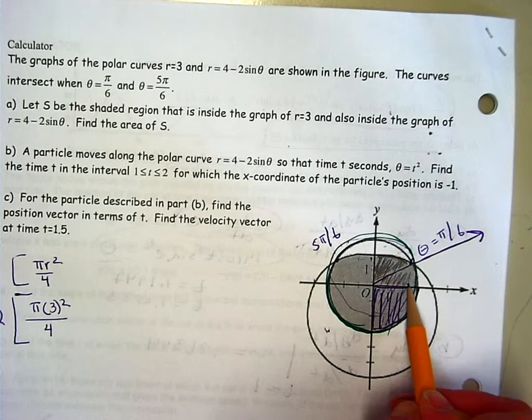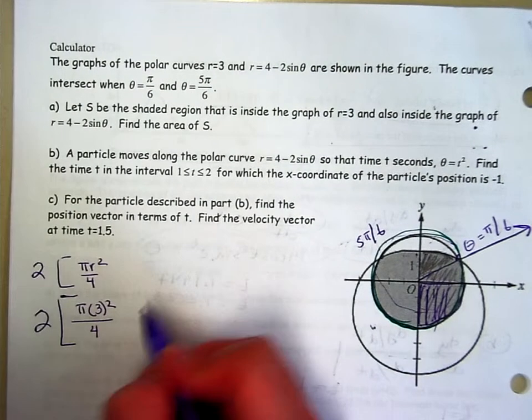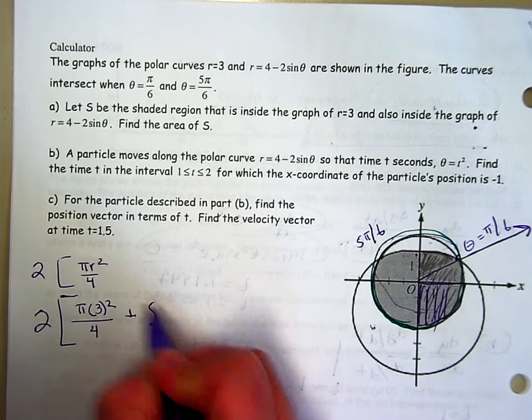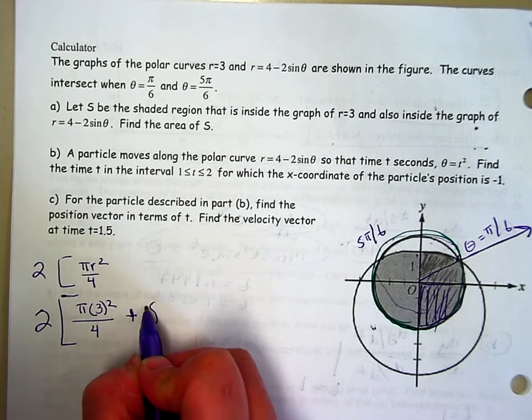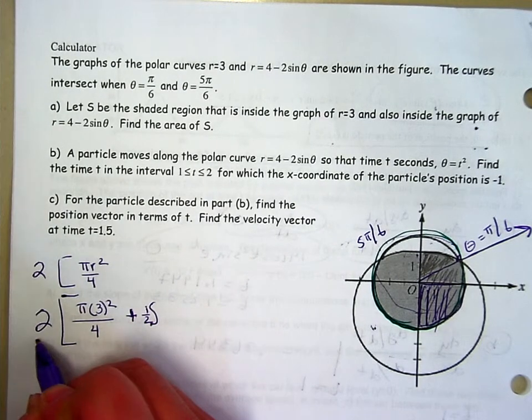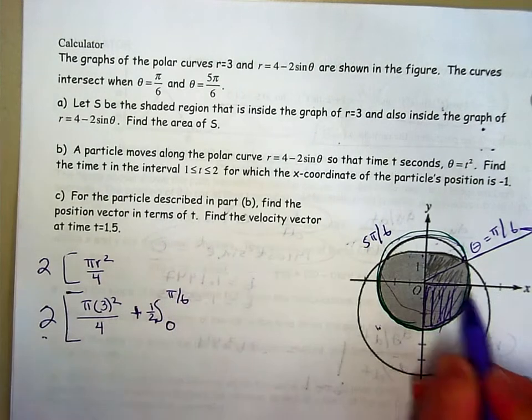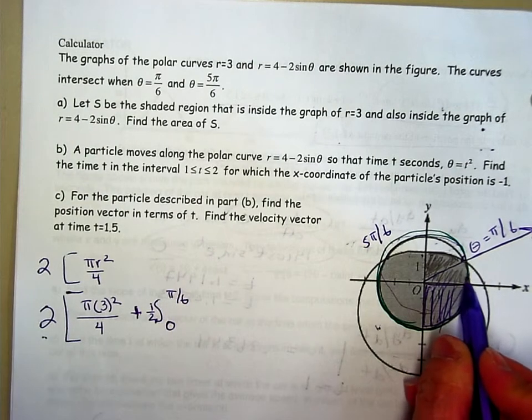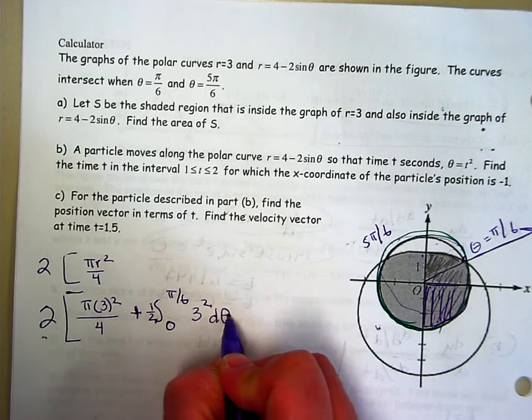So I need one integral for this piece here, another integral for this piece here. Don't forget, your area of a polar is 1/2 r² dθ. But I'm going to do it by symmetry, so that's why that 2 is there. From 0 to π/6, the only graph that's being bounded by is the green, which is a circle, so r² dθ.